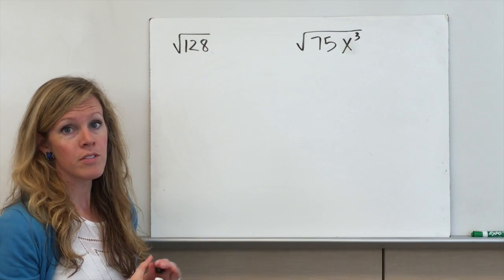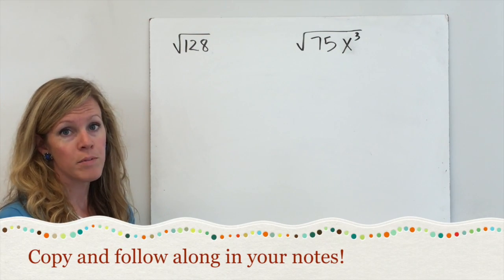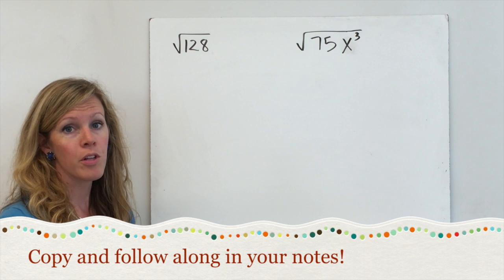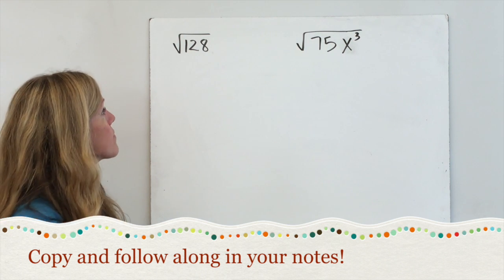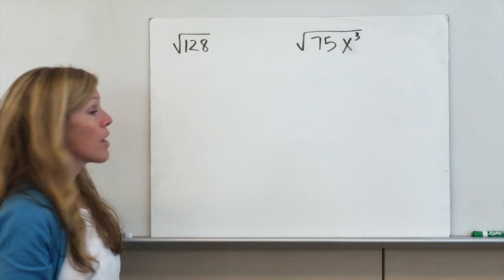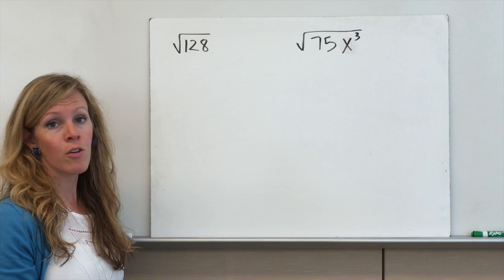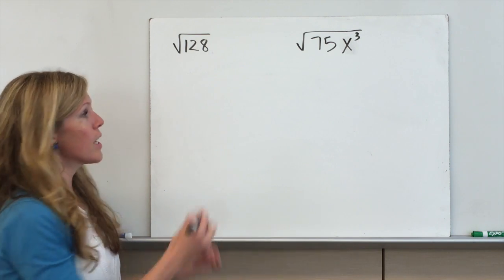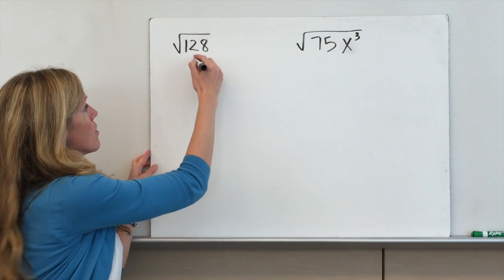Here are a couple more examples. Pause the video if needed so you can write them down and then follow along as I go through them. We'll start with the square root of 128, or radical 128. Let's think of the factors.